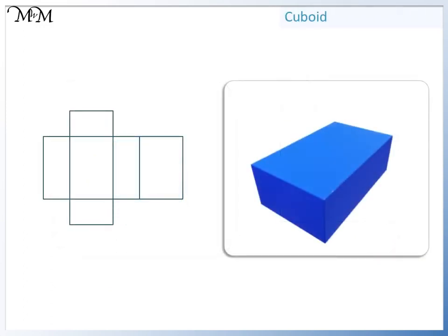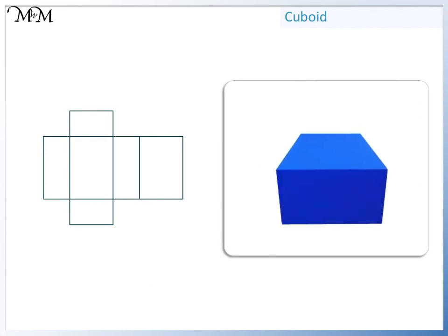Here we have a cuboid. Its surface is made up of rectangles.